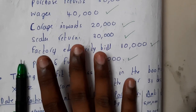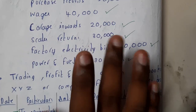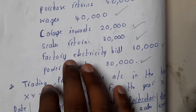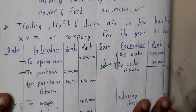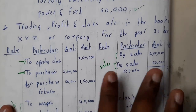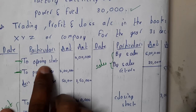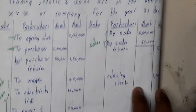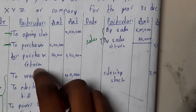The first thing you do is separate the items into four parts: direct expenses, purchases, opening stock, and sales. We'll draw the proforma — date, particulars, and two amount columns, because we'll be adding or subtracting a few amounts. On the left side you have opening stock, purchases, purchase returns, and direct expenses. On the right side you have sales and closing stock.